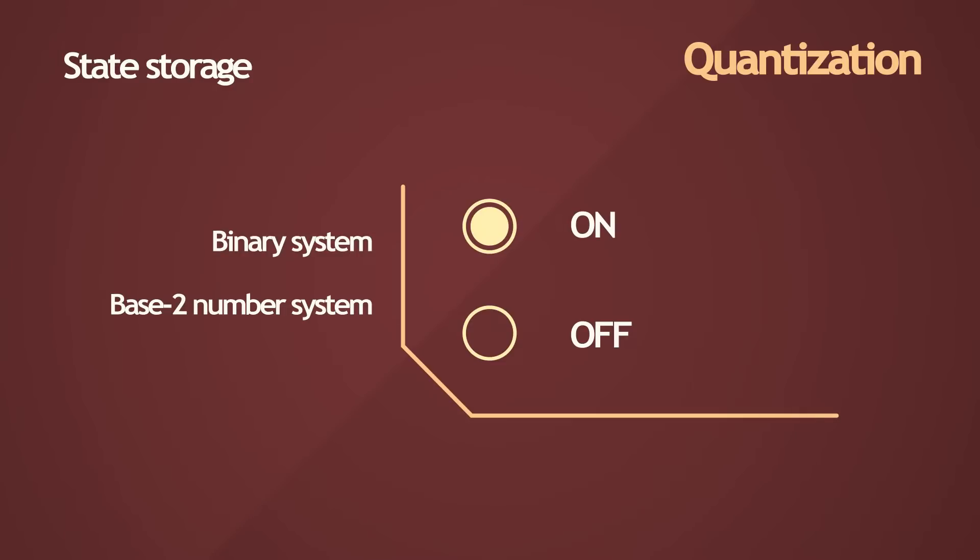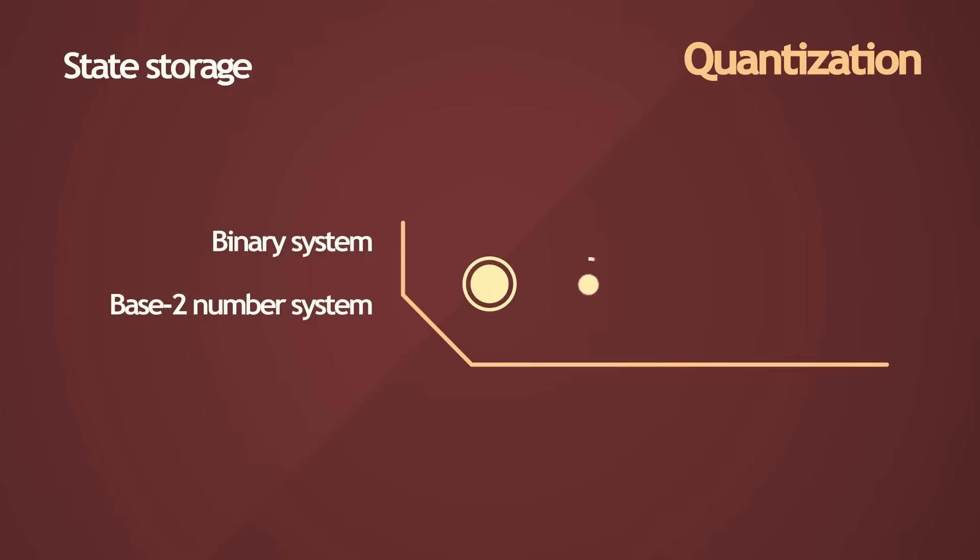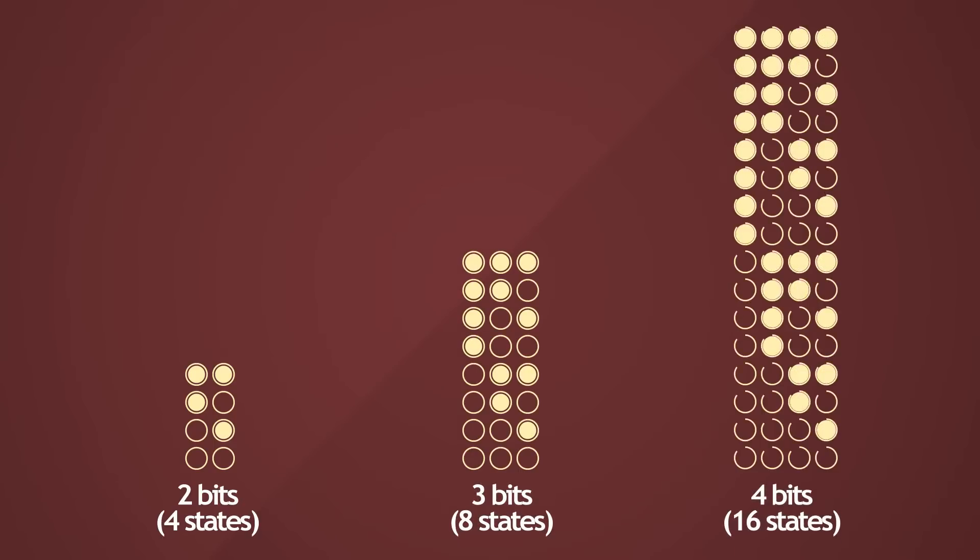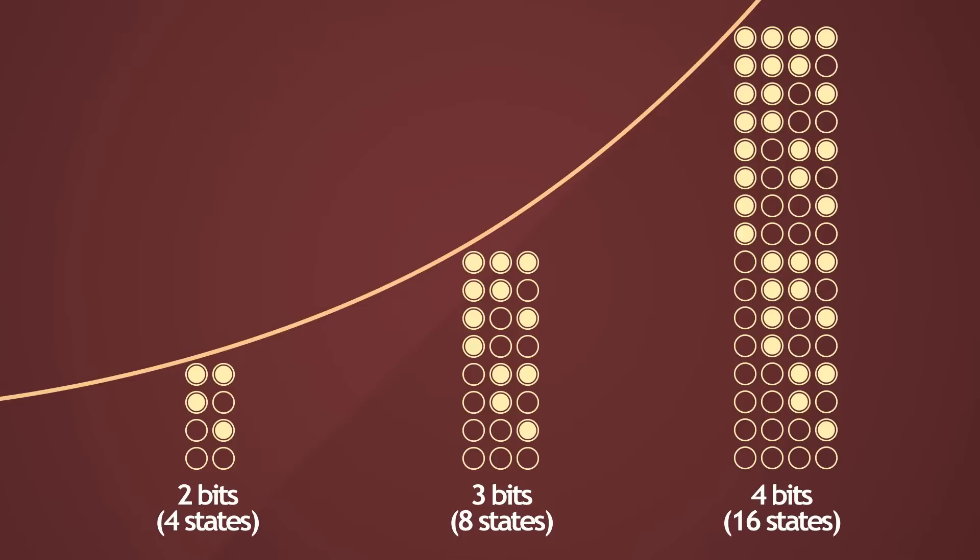We can expand this binary system to include a cascade of switches or bits. Though a single bit can only represent 2 distinct values, a number of bits together can quickly escalate the number of distinct state representations possible. Two bits can represent 4 unique states, 3 bits can represent 8, 4 bits can represent 16, and so on. You can see a pattern here. The growth is exponential. More precisely, the growth in the number of unique states possible is a power of 2.